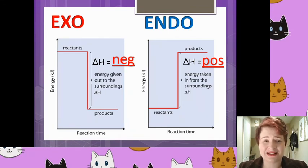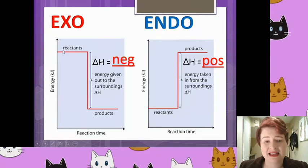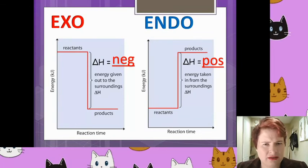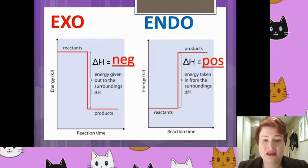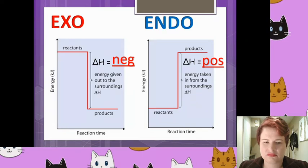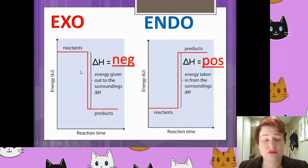So here are the solutions to that little task. The exothermic reaction: the energy of the reactant started high, the product had a lower energy, therefore energy is given off to the surroundings. So energy is given away, the surroundings are going to get hotter, the chemicals themselves are going to get colder. Delta H — that's change in enthalpy or change in energy — is negative. So if the reactants were at 100 and products at 50, the products' energy minus the reactants' energy: 50 minus 100 equals minus 50.